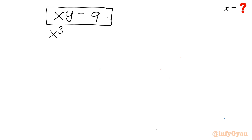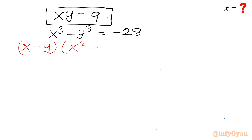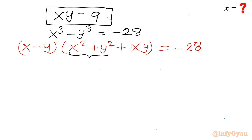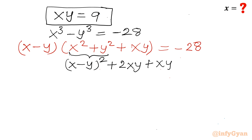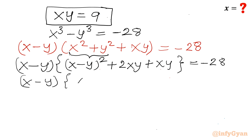Our first equation was x³ − y³ = −28. Applying the a³ − b³ formula, the left-hand side becomes (x − y)(x² + y² + xy) = −28. Now x² + y² can be rewritten as (x − y)² + 2xy, so we compensate to get (x − y)[(x − y)² + 3xy] = −28.